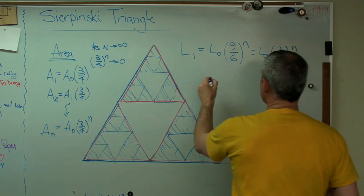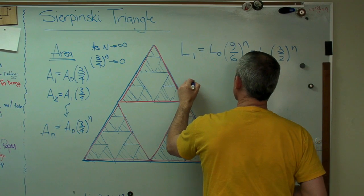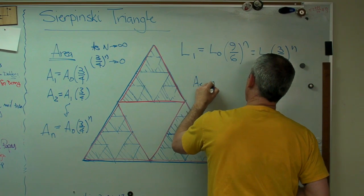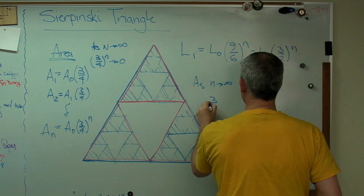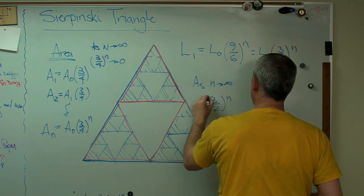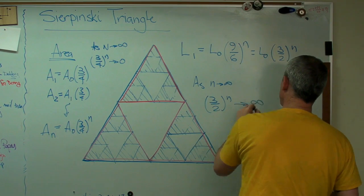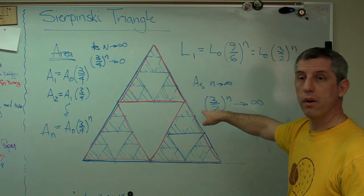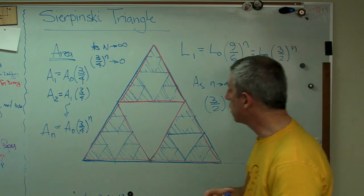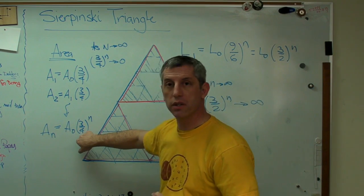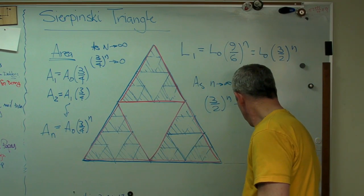So, if we take 3 over 2 to the N, so as N goes to infinity, it gets bigger and bigger and bigger, then 3 over 2 to the N goes to infinity, because this is more than 1, alright? So, every time we multiply it by itself, it gets bigger and bigger and bigger, just by the same sense that this one got smaller and smaller and smaller.